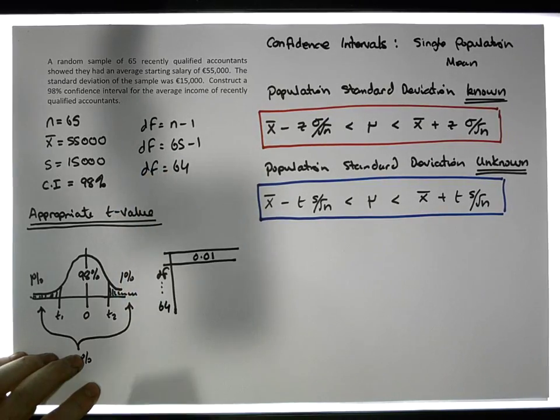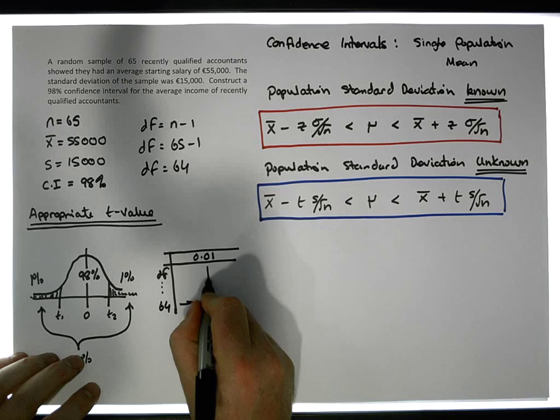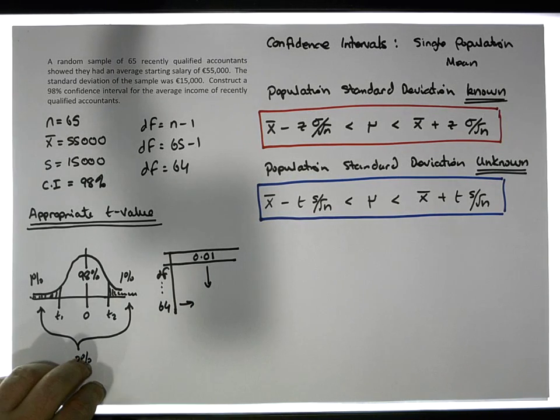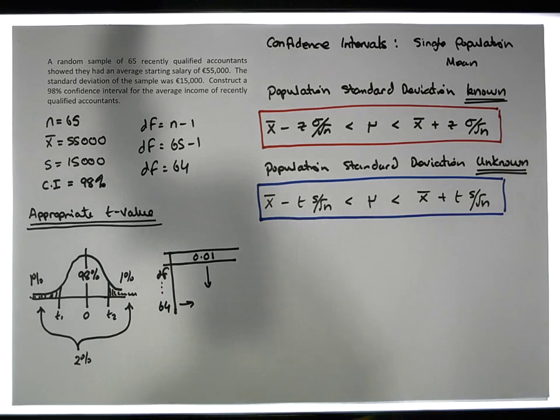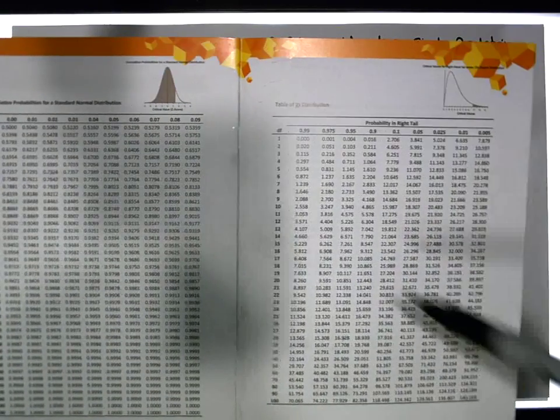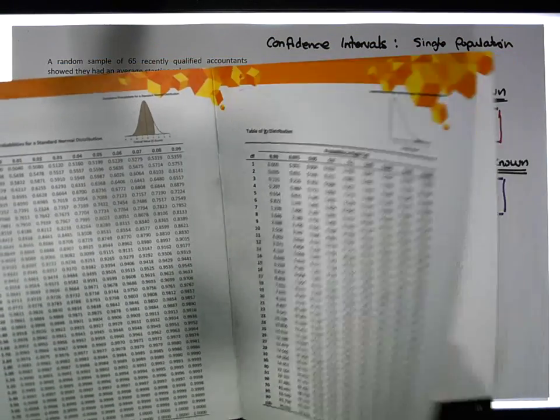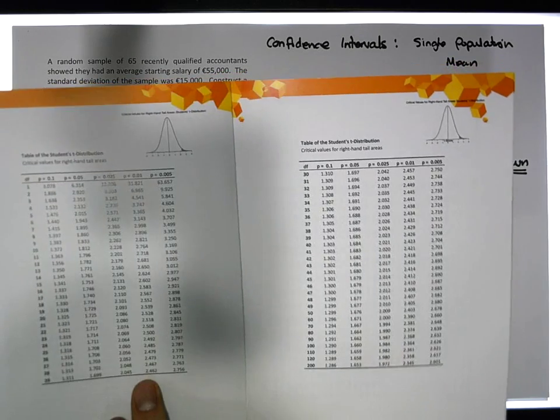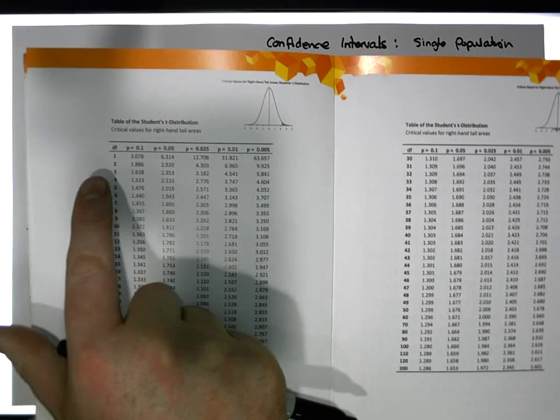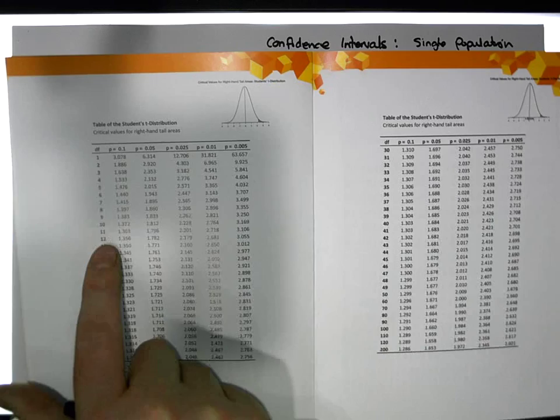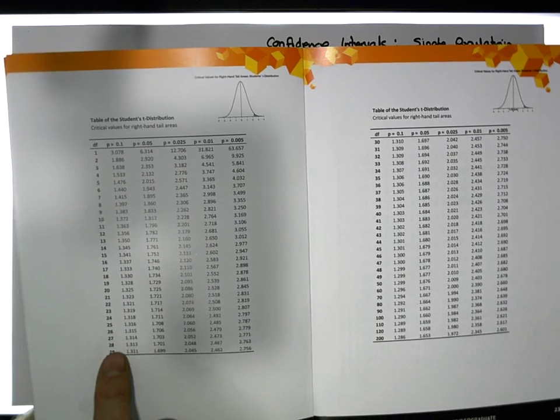We've got 64 degrees of freedom, so we're going to triangulate in the t-tables to see what this appropriate t-value is. Unfortunately, our tables give degrees of freedom going up in single units, but when we get up to 50, we start to go up in units of 10.